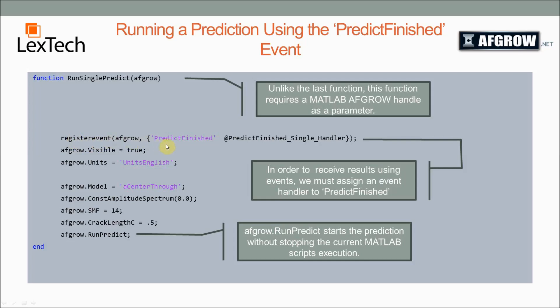Next, we need to register the predictFinished event from AFGRO. If you want more information on that event, you can look in the COM user manual. We set it to our AFGRO handle, and then in the curly braces the name of the event, and then the handler that we want to set it to, which I'll cover in a moment. All of these properties are set the same as we did them last time, or very similar. And then our final line calls AFGRO.runPredict. As you can see, we don't set this to any variable because this function doesn't return anything.